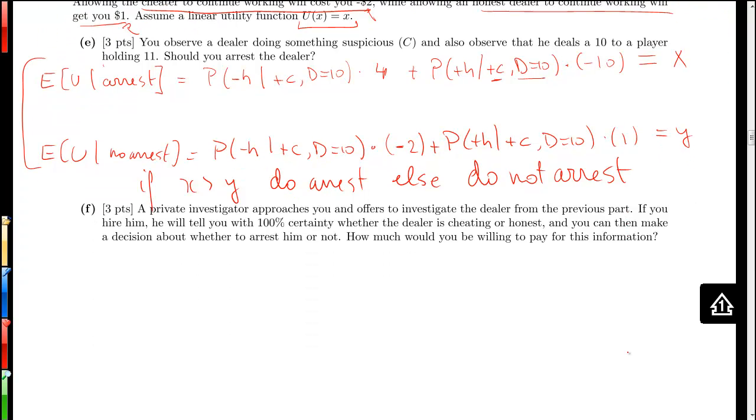Moving on to the next part, a private investigator approaches you and offers to investigate the dealer from the previous part. If you hire him, he will tell you with 100% certainty whether the dealer is cheating or honest, and you can then make a decision about whether to arrest or not. How much would you be willing to pay for this information?